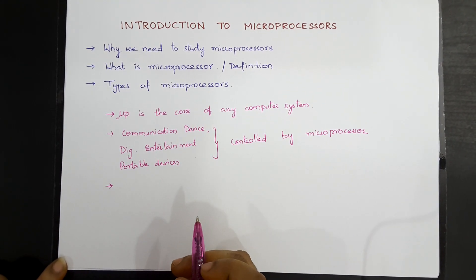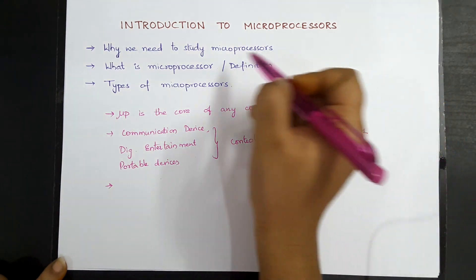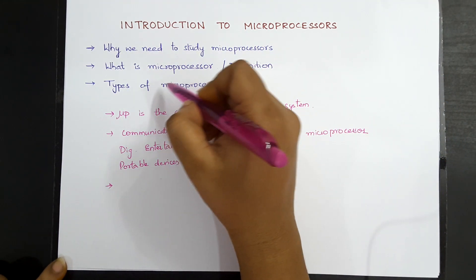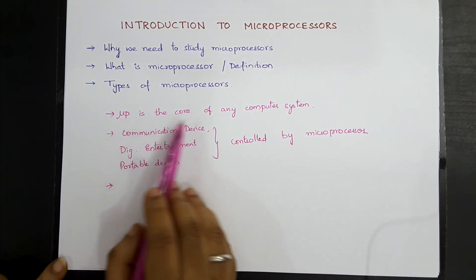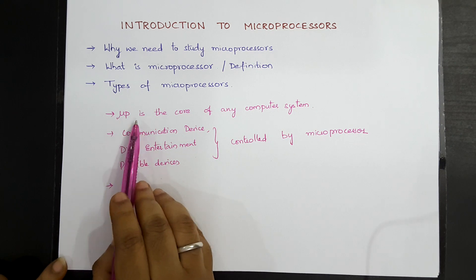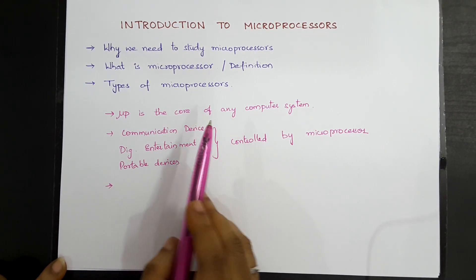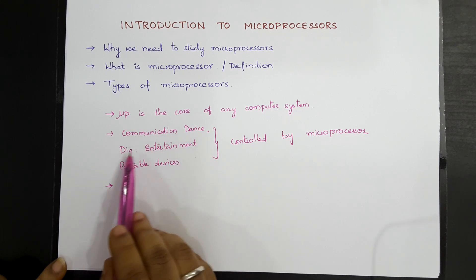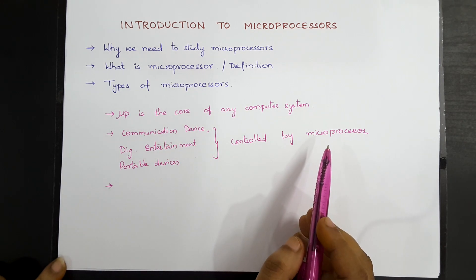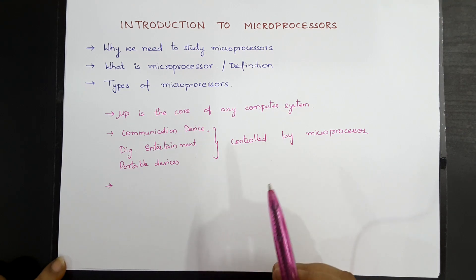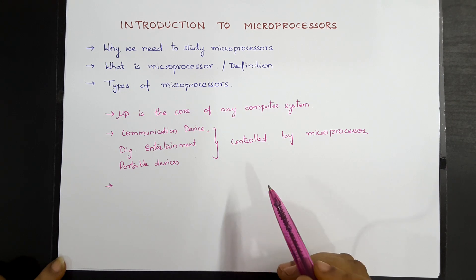In this session we will get introduced to microprocessors — why we need to study them, what a microprocessor is, its proper definition, and the types of microprocessors. If you observe any computer system, the microprocessor is the basic processing element, or it is the CPU or core of any computer system. Likewise, nowadays any communication device, digital entertainment, or portable device is controlled by a microprocessor. After the introduction of the microprocessor, the way we view, analyze, and control the world around us over the past two decades has totally changed.